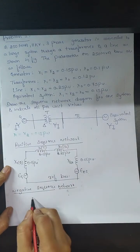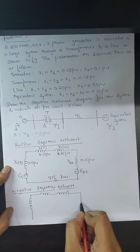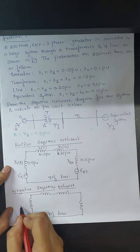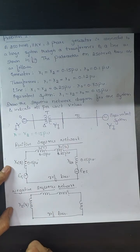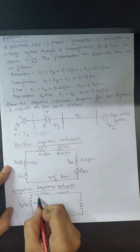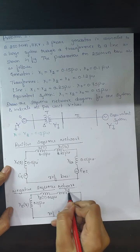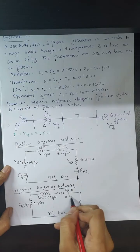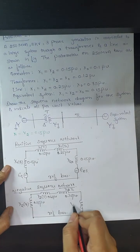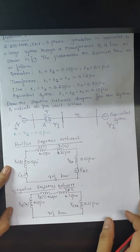The negative sequence network shows the reactances of the generator, transformer, transmission line, and equivalent system, connected to a reference bus. The values are: X2(generator) = 0.15 per unit, X2(transformer) = 0.12 per unit, X2(transmission line) = 0.25 per unit, and X2(equivalent system) = 0.15 per unit. All data is directly given in the problem.